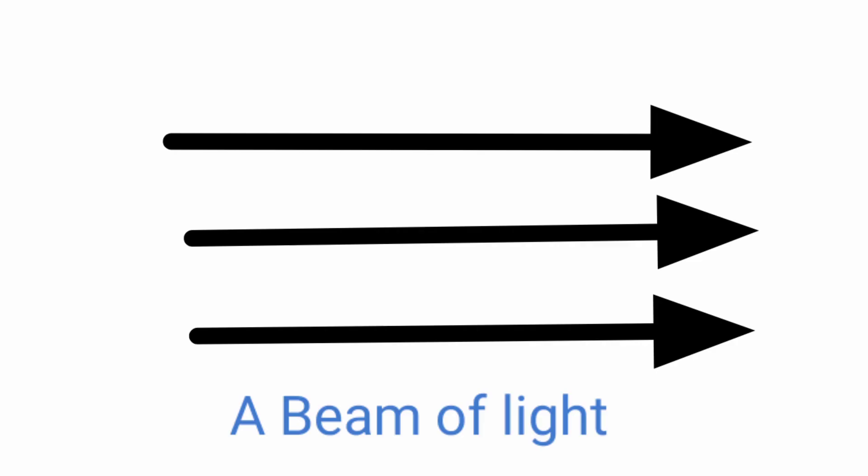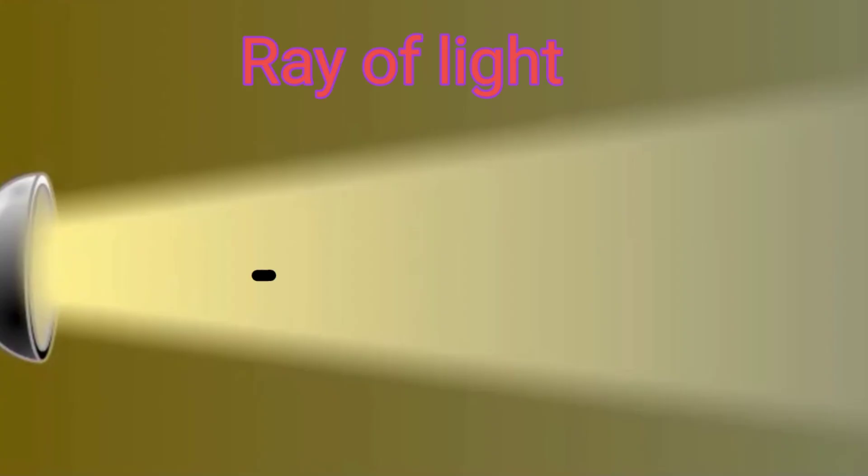This property of light can be represented by a ray or a beam of light. What is a ray? It is a very narrow path of light which is represented by a line with an arrow. The arrowhead shows the direction in which the light is traveling.